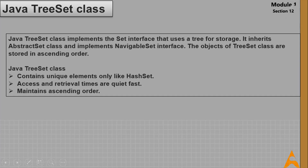Now let's discuss Java TreeSet. TreeSet implements the Set interface using a tree for storage. It inherits AbstractSet and implements NavigableSet interface. Objects of TreeSet are stored in ascending order. Key points: it contains unique elements only like HashSet, access and retrieval times are quite fast, and it maintains ascending order.